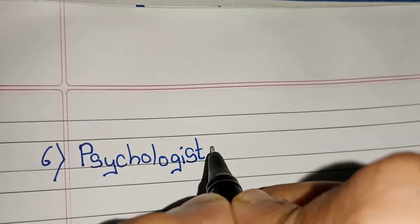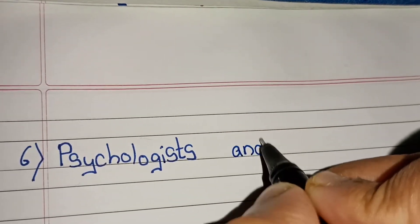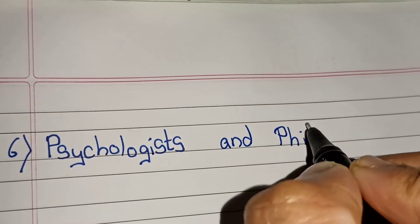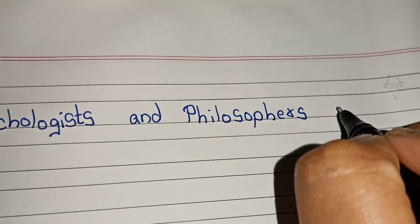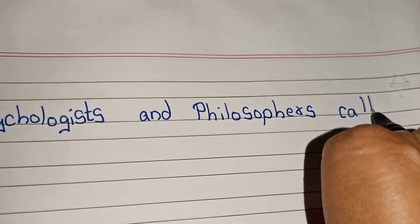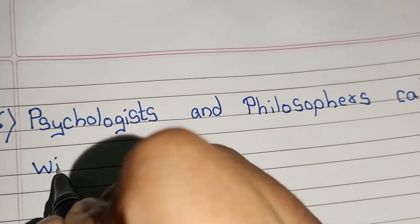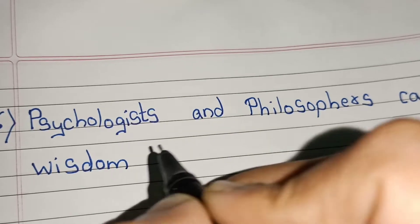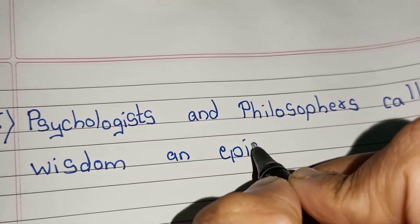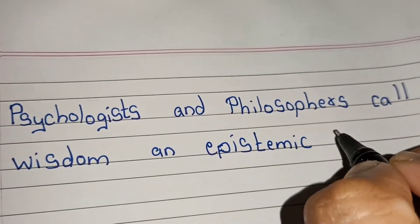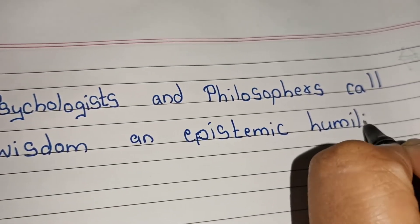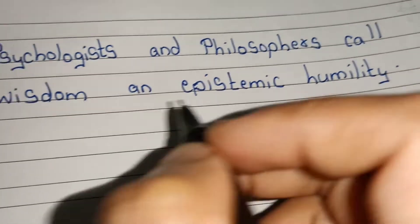Six point, psychologists. Psychologists and philosophers call wisdom an epistemic humility. E-P-I-S-T-E-M-I-C humility.